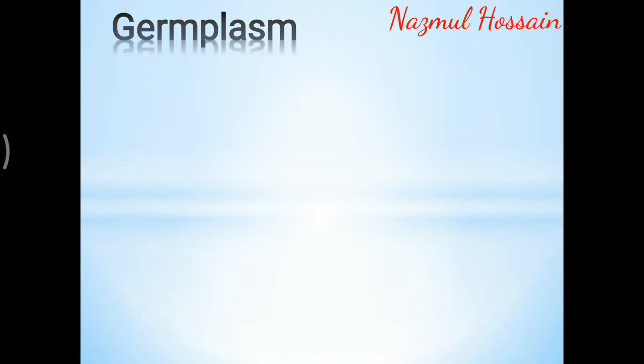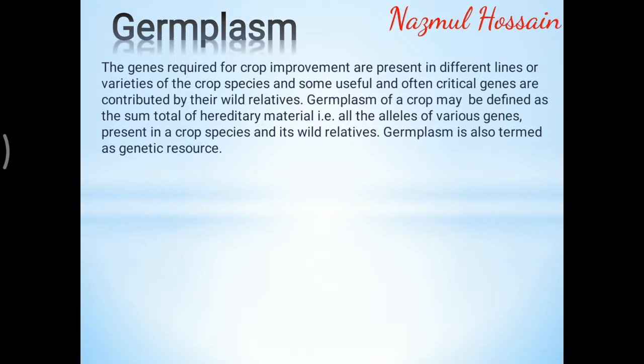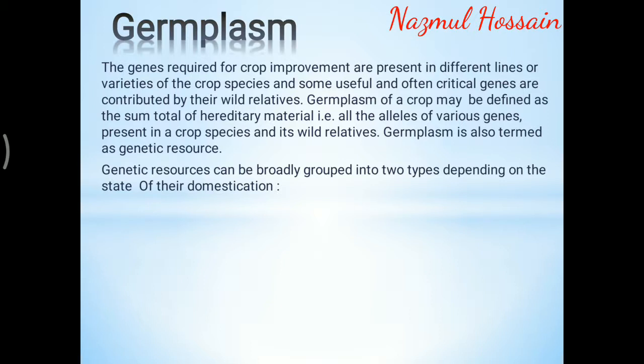Germplasm: the genes required for crop improvement are present in different lines or varieties of the crop species, and some useful and often critical genes are contributed by their wild relatives. Germplasm of a crop may be defined as the sum total of hereditary material — that is, all the alleles of various genes present in a crop species and its wild relatives. Germplasm is also termed as genetic resource. Genetic resources can be broadly grouped into two types depending on the state of their domestication: cultivated germplasm and wild germplasm.